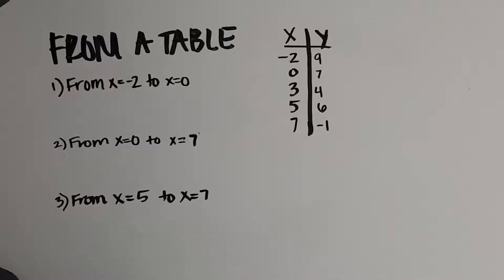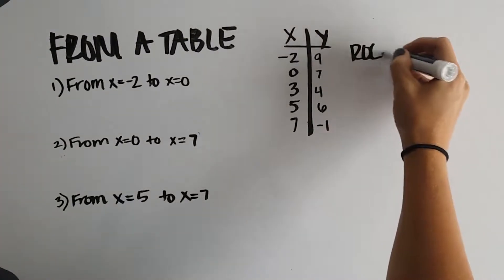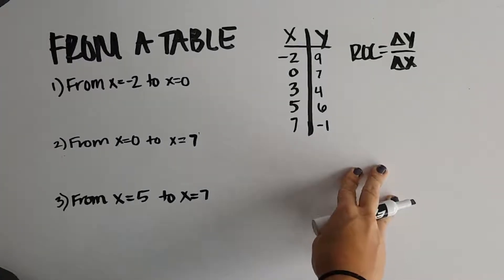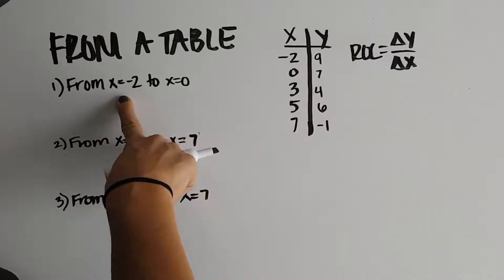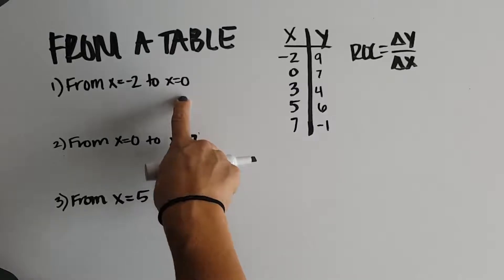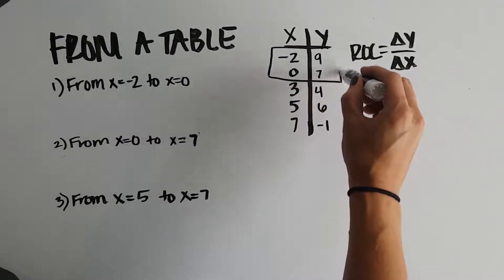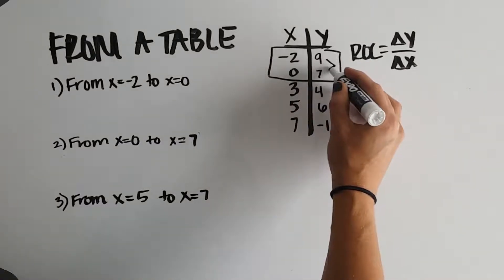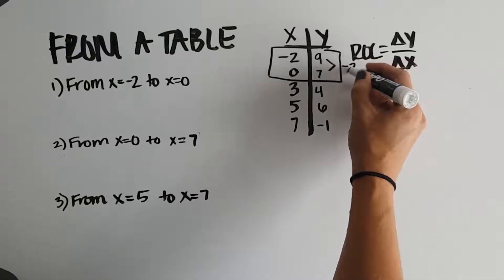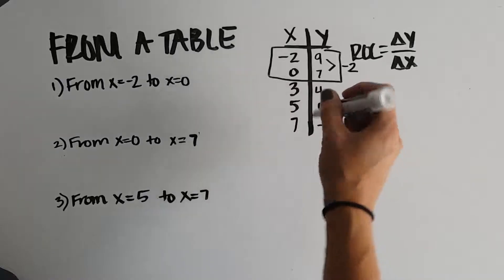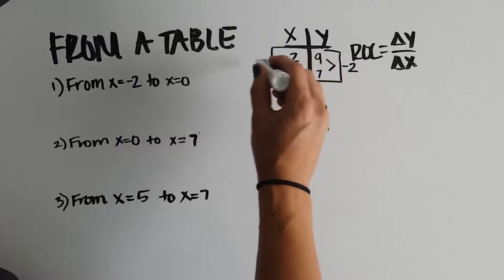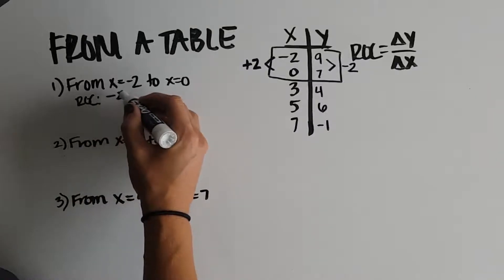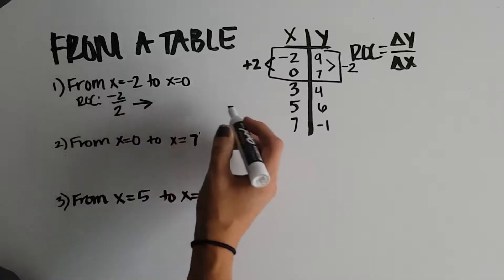Now let's look at how to find the rate of change when given a table of values. Rate of change equals the change in y divided by the change in x on a given interval. The first question asks us to find the rate of change from x equals negative 2 to x equals 0. The change in y: going from 9 to 7, we subtracted 2, so the change in y is negative 2. Going from negative 2 to 0 in x, the change in x is positive 2. So the rate of change is negative 2 divided by positive 2, which gives negative 1.